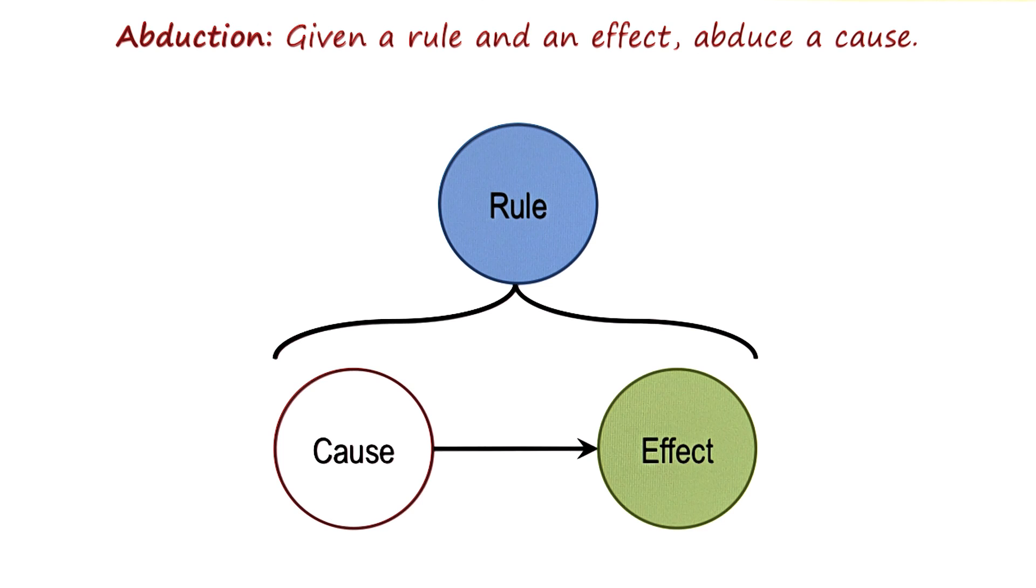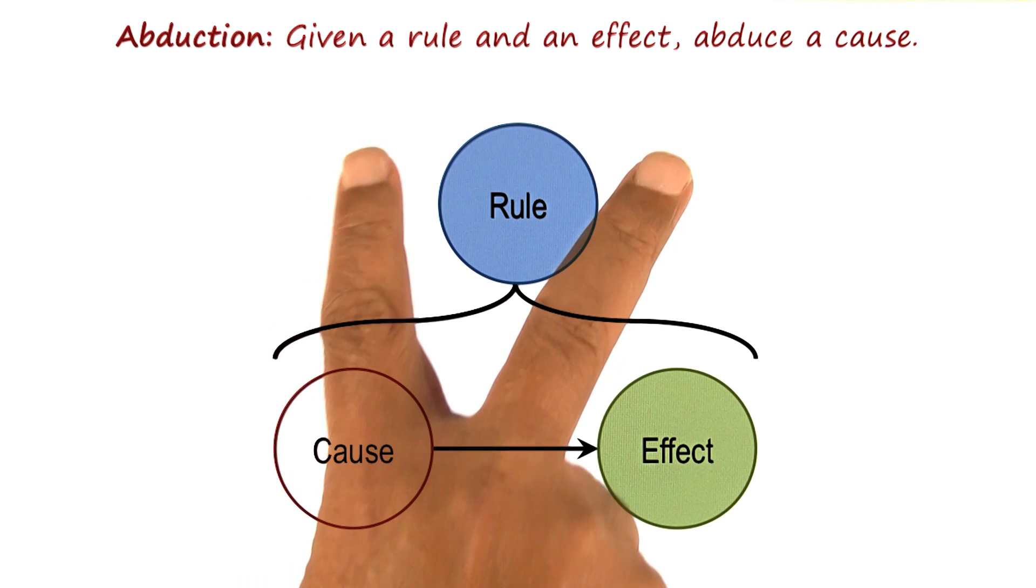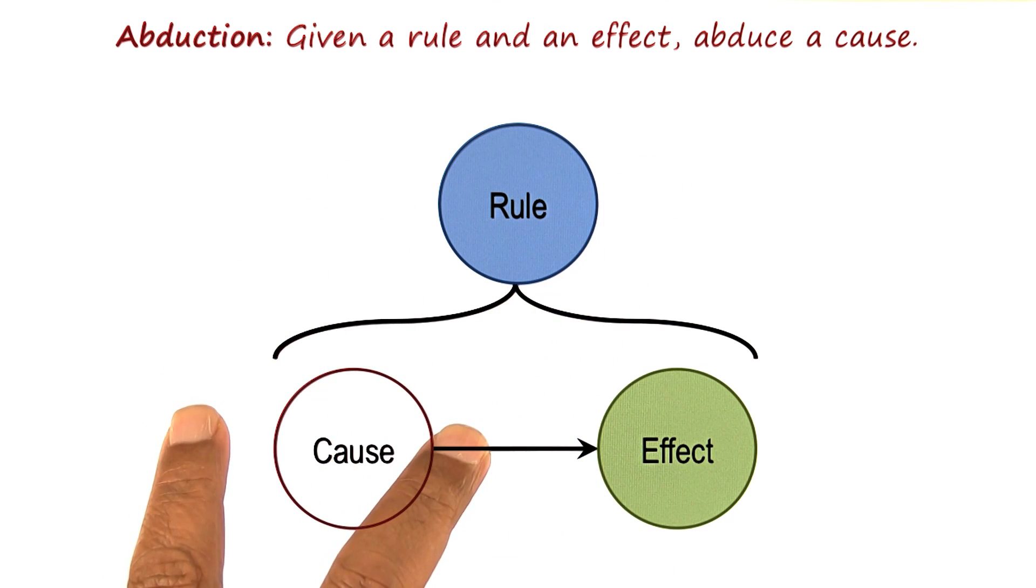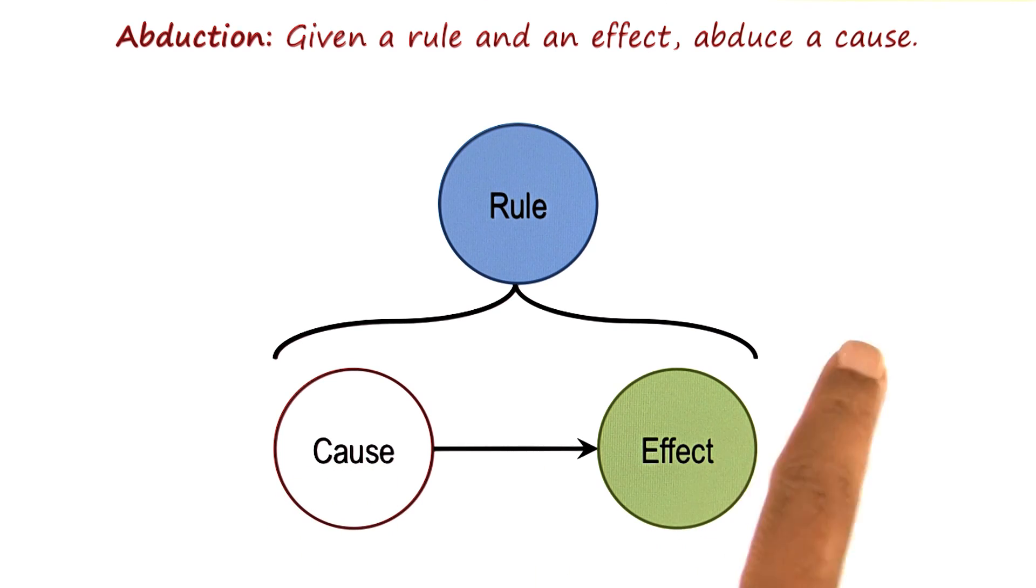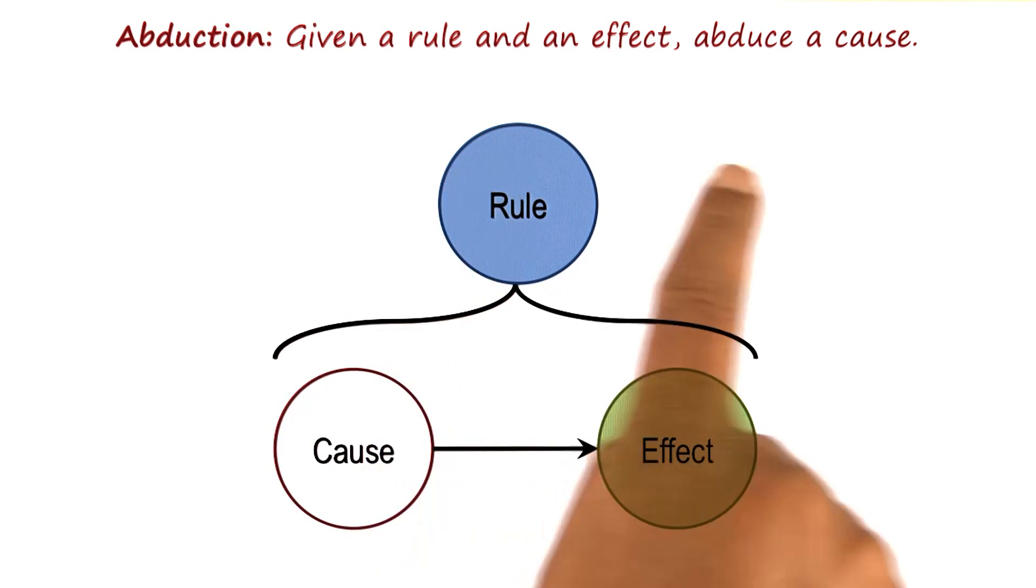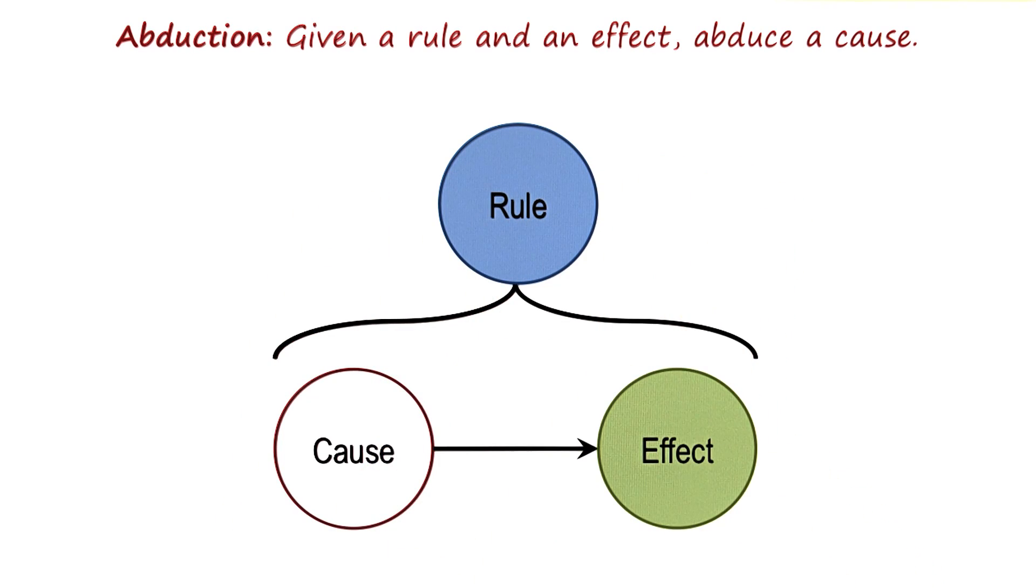First, deduction is truth-preserving. If the rule is true and the cause is true, we can always guarantee that the effect is true as well. Induction and abduction are not truth-preserving. We may know something about the relationship between cause and effect for some sample, but that does not mean that the same relationship holds for the entire population. Induction does not always guarantee correctness.